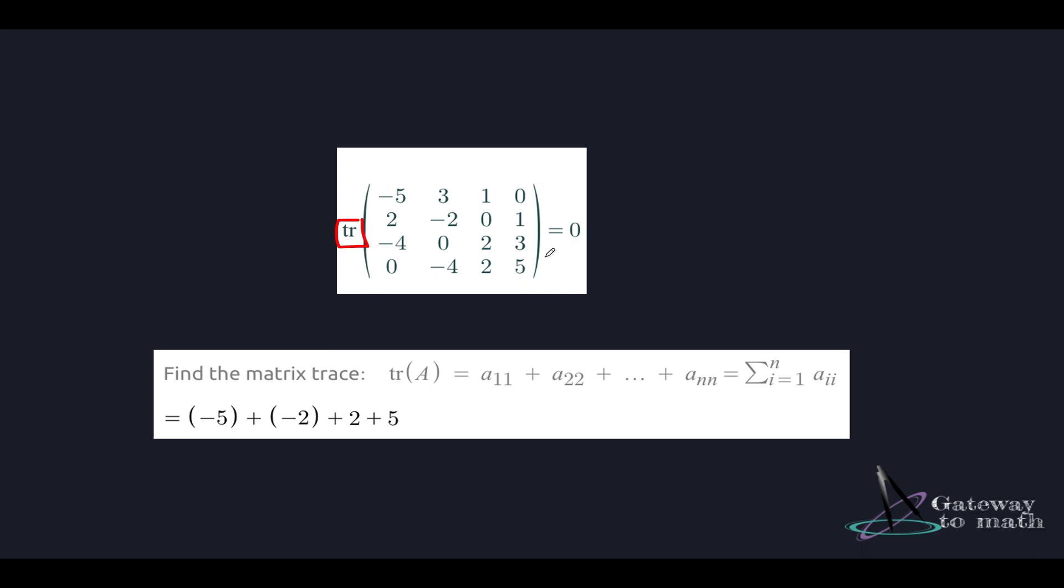We represent trace with the initials tr and then the values of the matrix inside the parenthesis. So to calculate the trace, all you need to do is sum up all the diagonal entries of a matrix. For this example, the diagonal entries are minus 5, minus 2, 2, and 5. You just have to add all of these together.